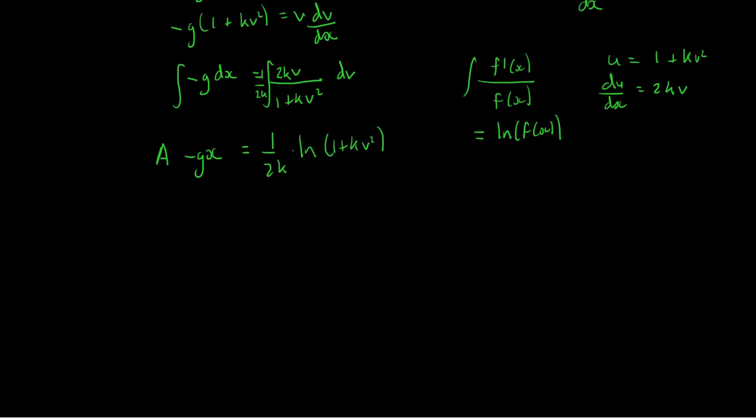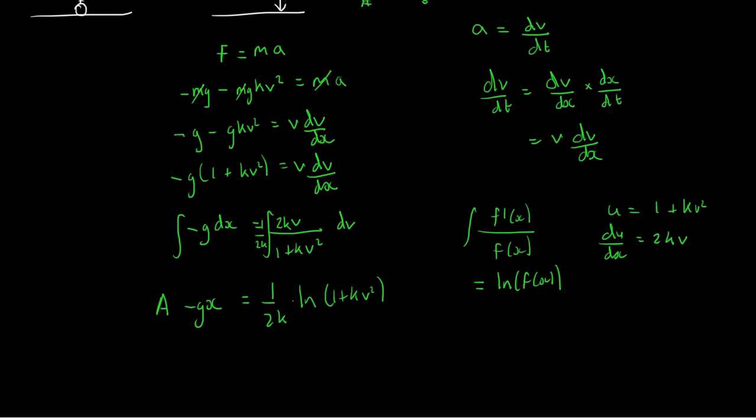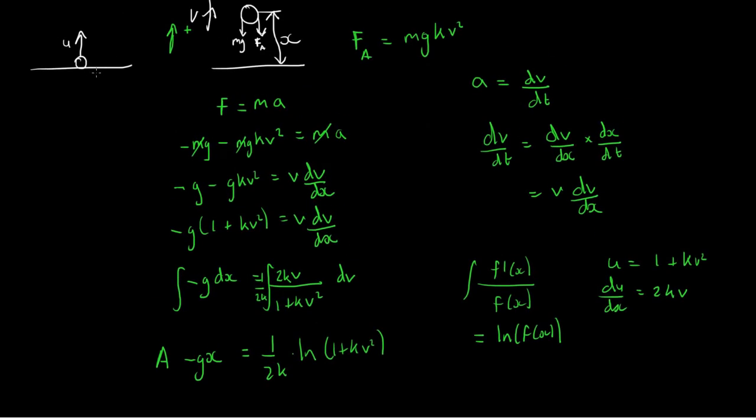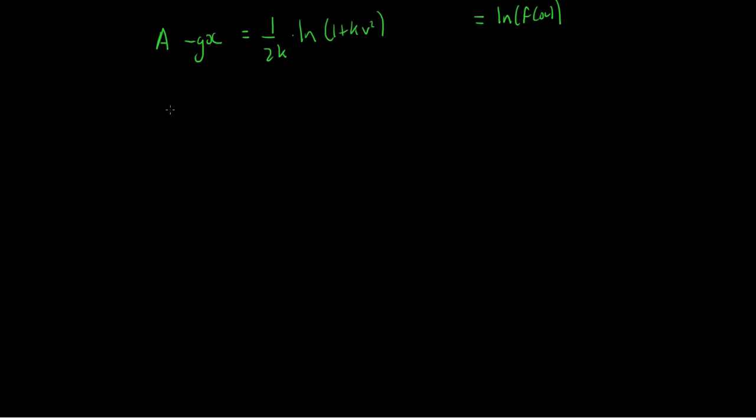We've got a constant. We can't really deal with this until we find out what the constant is. It's no good to us. But using our initial conditions from this here, we were told that it starts on the horizontal and it's launched with the speed u. So from this we know that when x equals 0, v is equal to u. And now we're going to use these initial conditions to find A. So when x is 0, minus gx is 0, we end up with A is equal to 1 over 2k times the natural logarithm of 1 plus k, instead of v squared it's now u squared. So we've got our constant A.